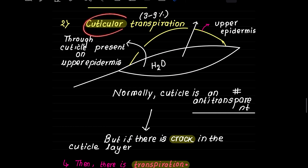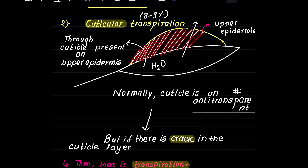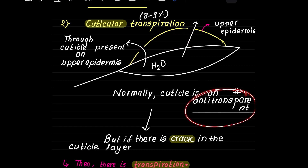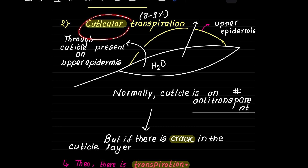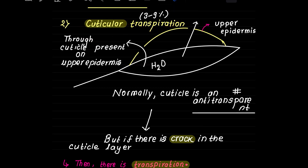The second type is cuticular transpiration. The upper epidermis has a cuticle which normally prevents transpiration, but cracks in the cuticle allow water loss. Cuticular transpiration accounts for around 3 to 9% of total water loss.